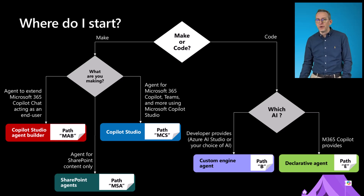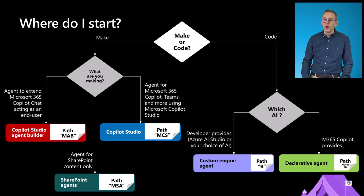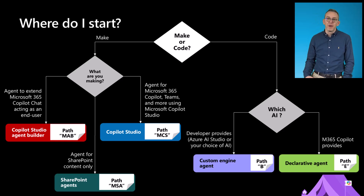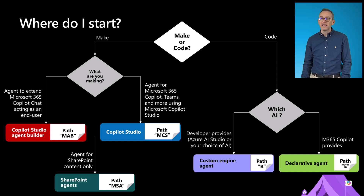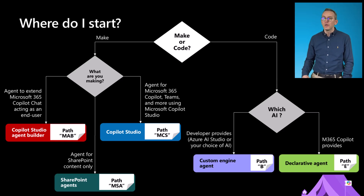If you are a developer and you want to wear the hat of a pro developer, you will go for the additional build or extend path. If you want to extend the Microsoft 365 Copilot experience using a declared agent you will go for the E path, and if you want to create a custom engine agent using an AI engine and model of your own, then you will go for the custom engine agent path which is called path B.